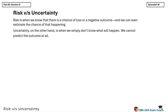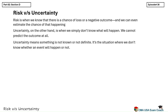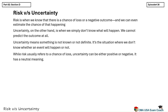Uncertainty means something is not known or not definite. It's the situation where we don't know whether an event will happen or not. While risk usually refers to a chance of loss, uncertainty can be either positive or negative — it has a neutral meaning. The outcome could be something good or something bad, but the point is we just don't know. For example, imagine you're planning a business trip next month to attend a trade fair. You know there's a 30% chance of flight cancellation due to weather — that's risk, because the probability is known. But if there's news of a possible government policy change that could either help or hurt your business, and nobody knows if or when that law will be passed, that is uncertainty, because you can't measure or predict it at all.